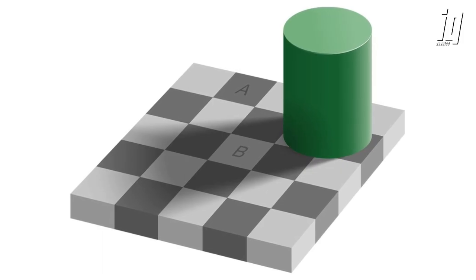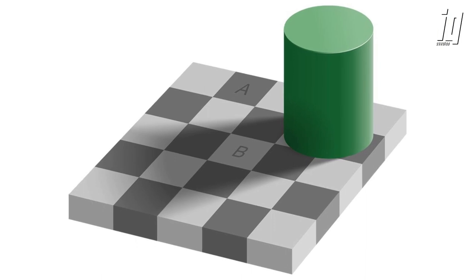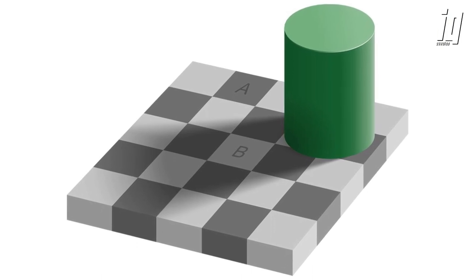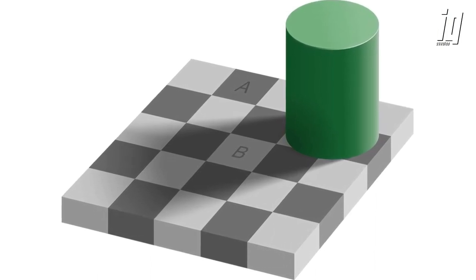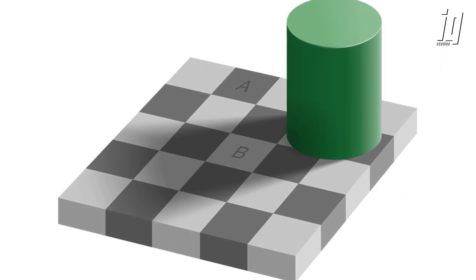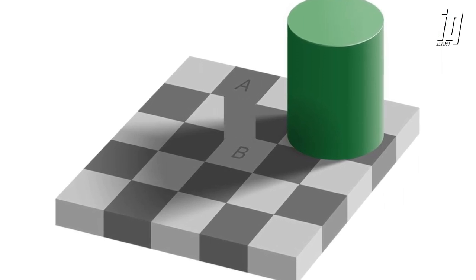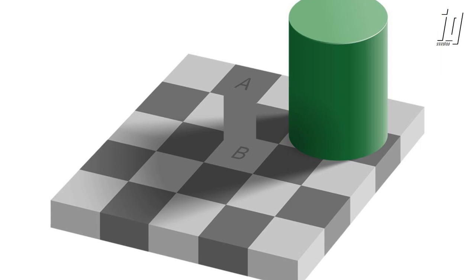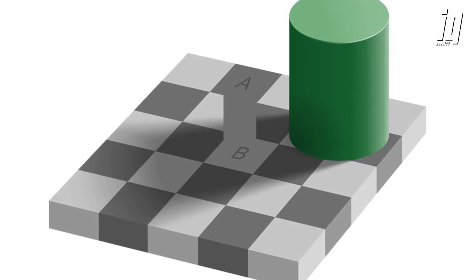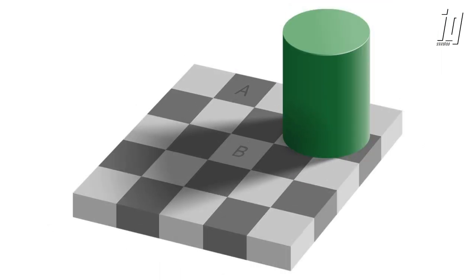Another example of contrast in optical illusions is the checker shadow illusion. In this illusion, two squares of different shades of gray are placed on a checkerboard. However, the square in the shadow appears to be much darker than the square in the light. This is because our brains use contrast to adjust for lighting conditions, and the darker square in the shadow appears lighter than it actually is.